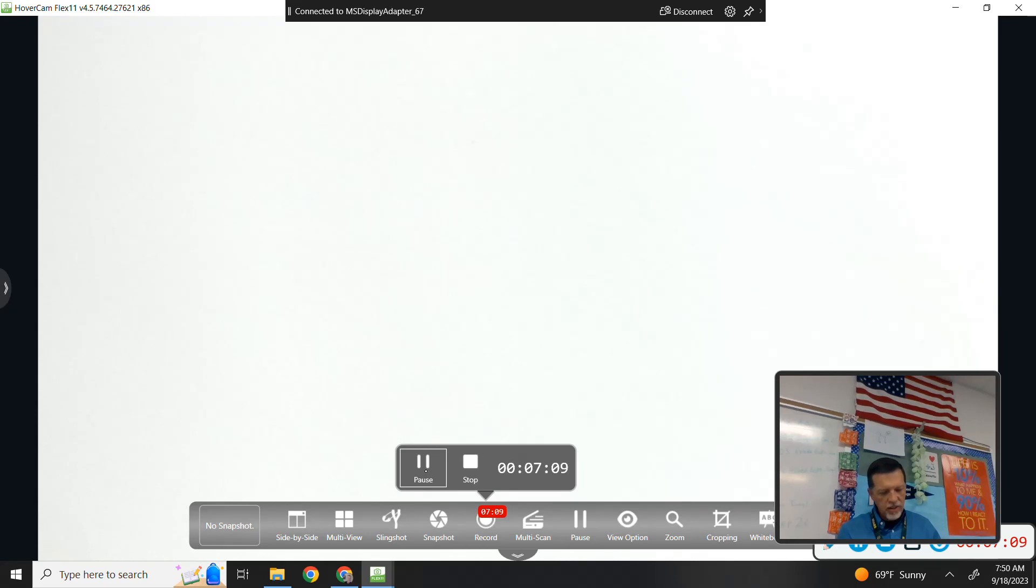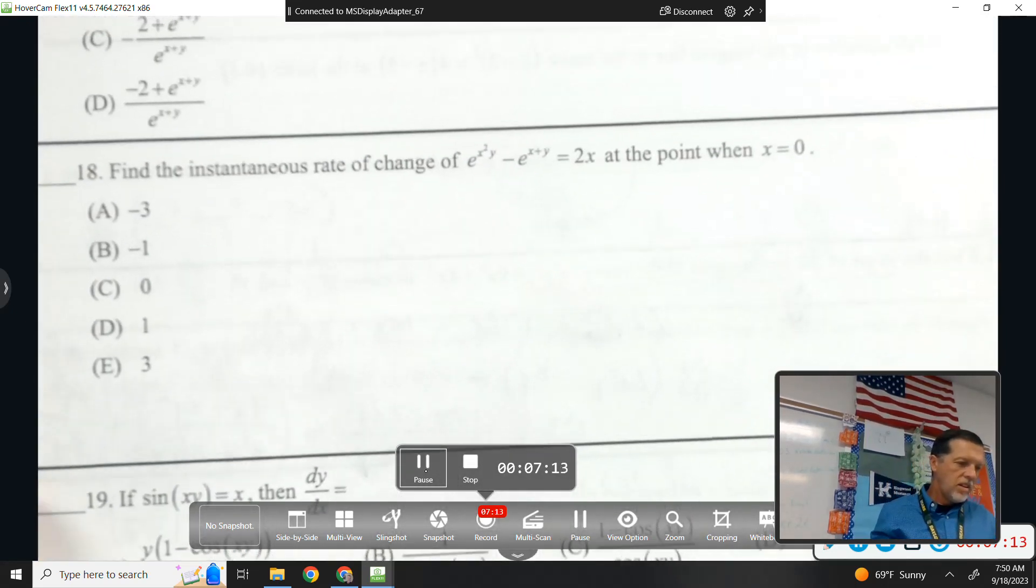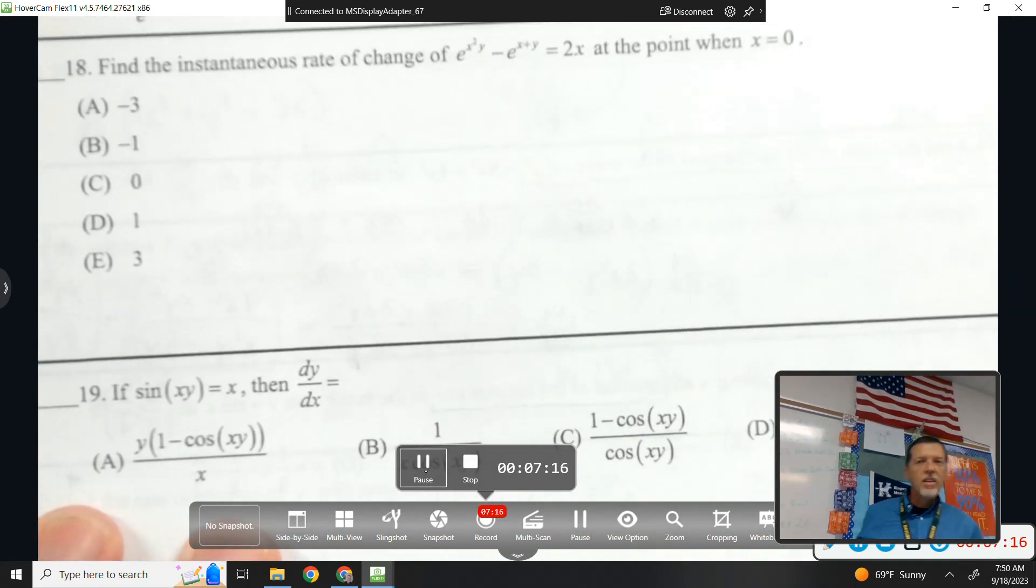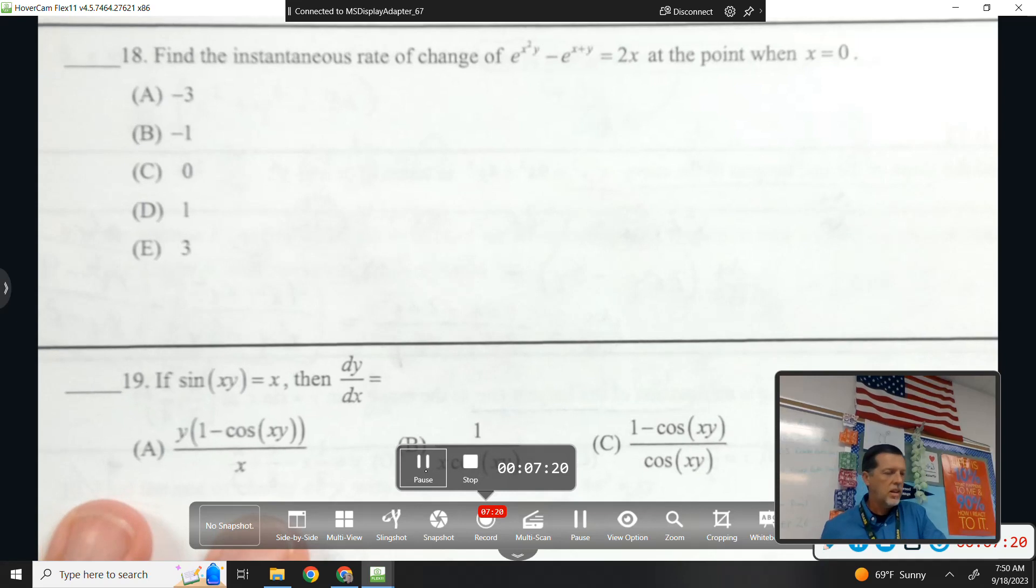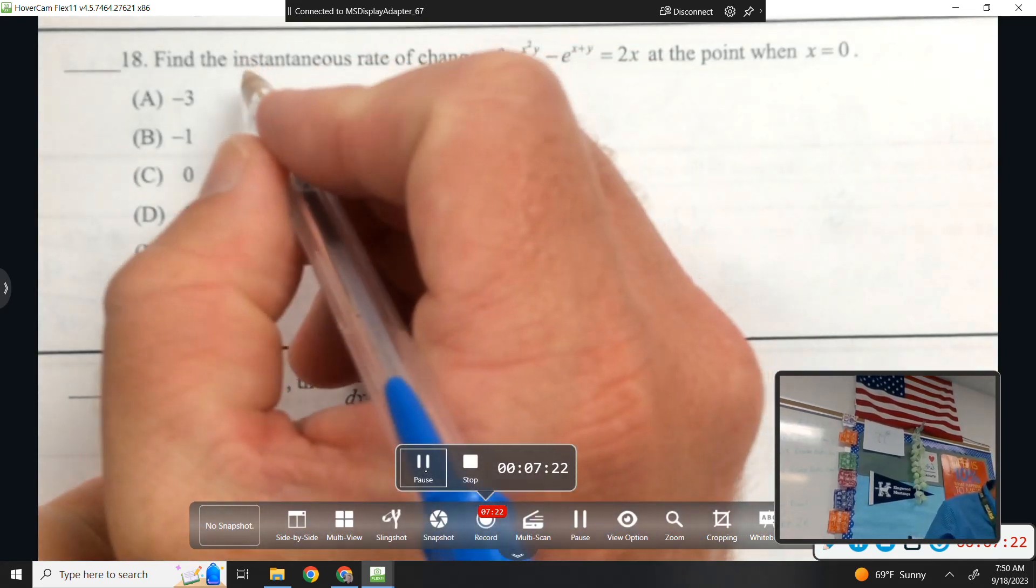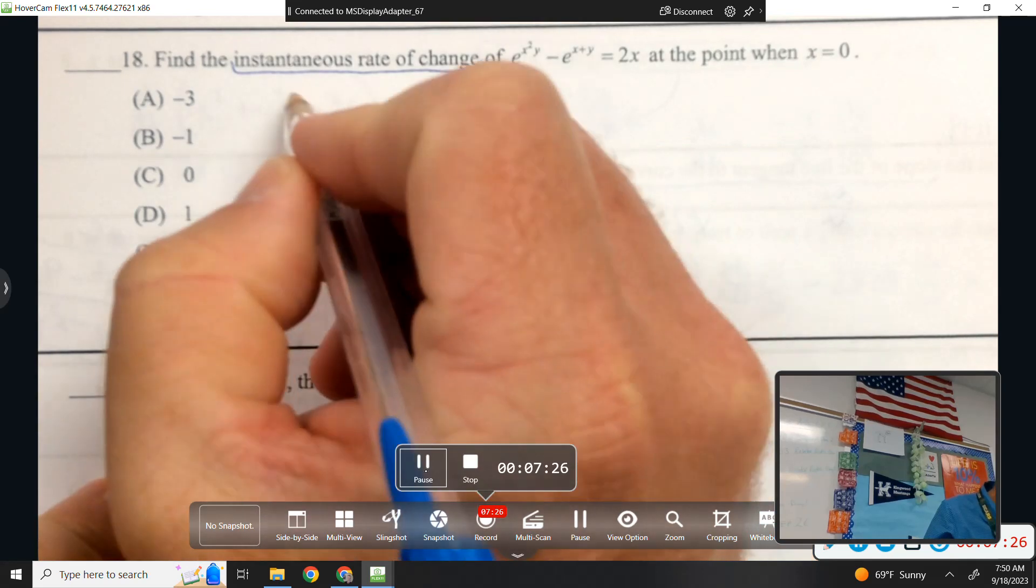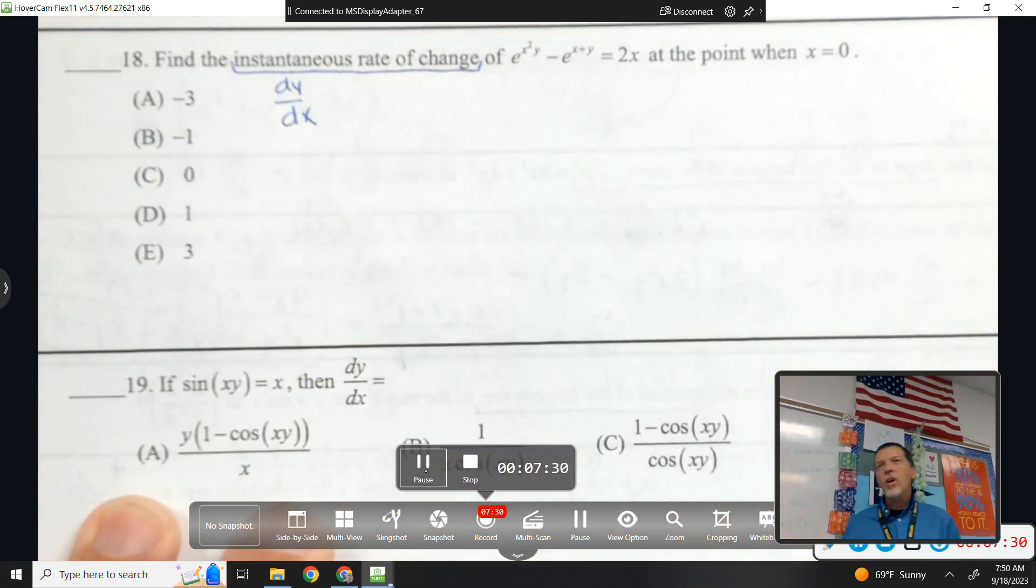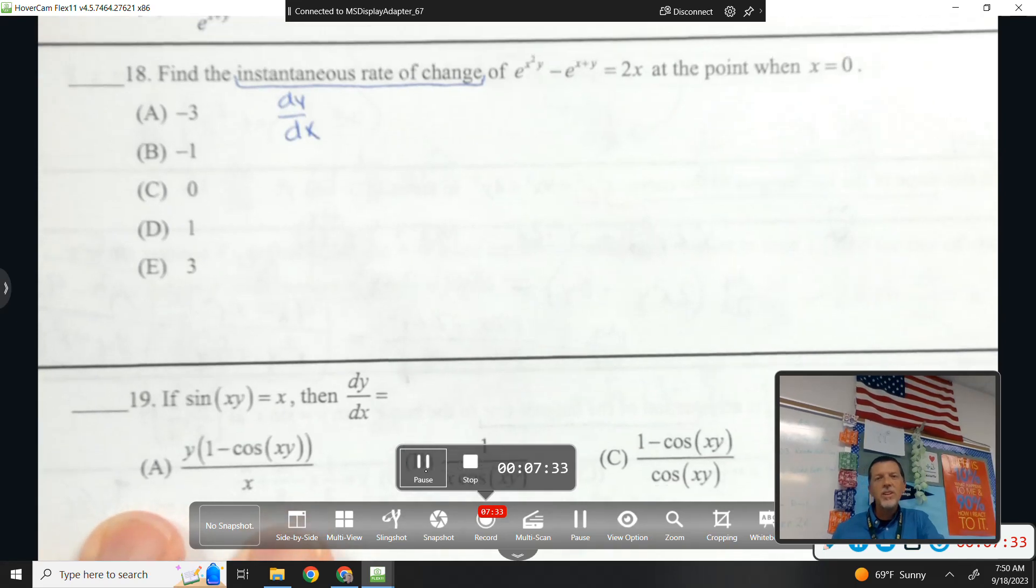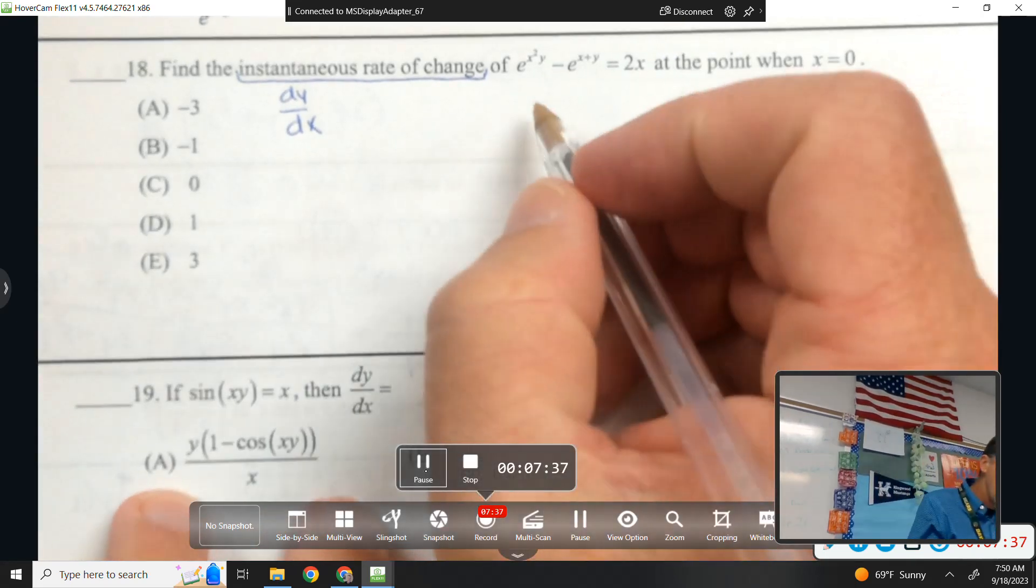One more I wanted to look at. Things start getting a little repetitive because it's always the same steps. Let's look at number 18. Find the instantaneous rate of change. So again, we're just using all the different phrases to make sure you know them all. For dy/dx.